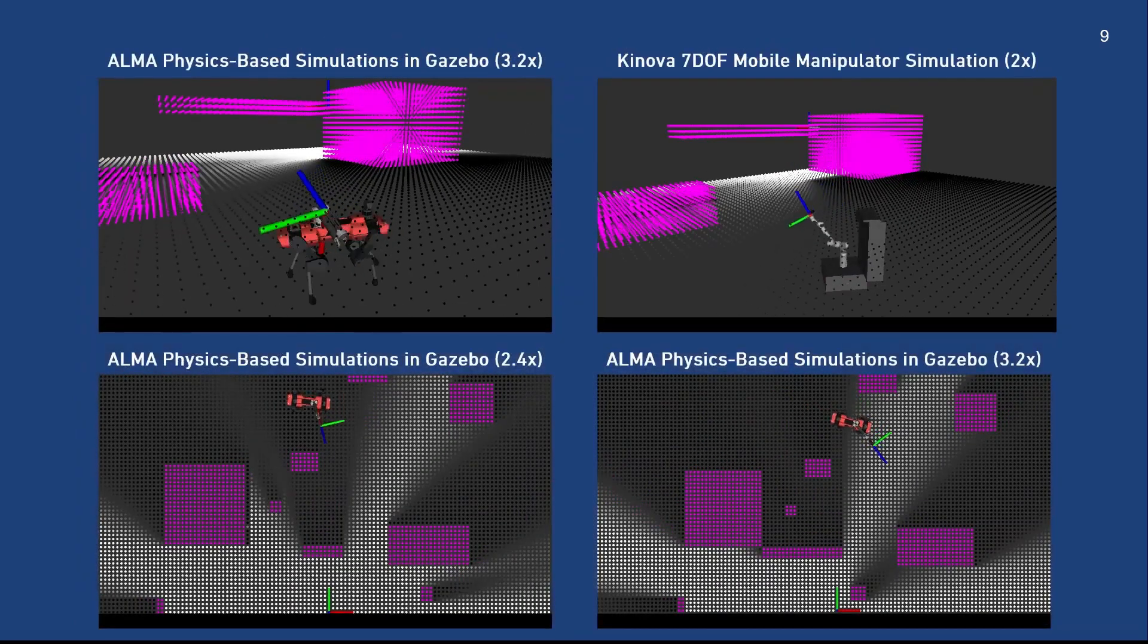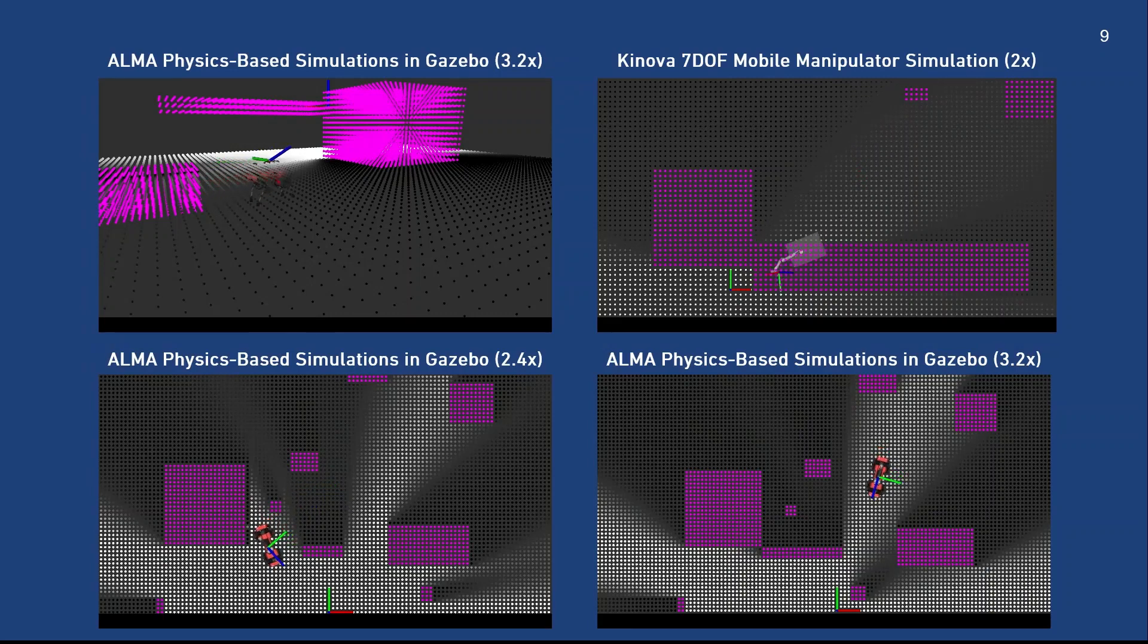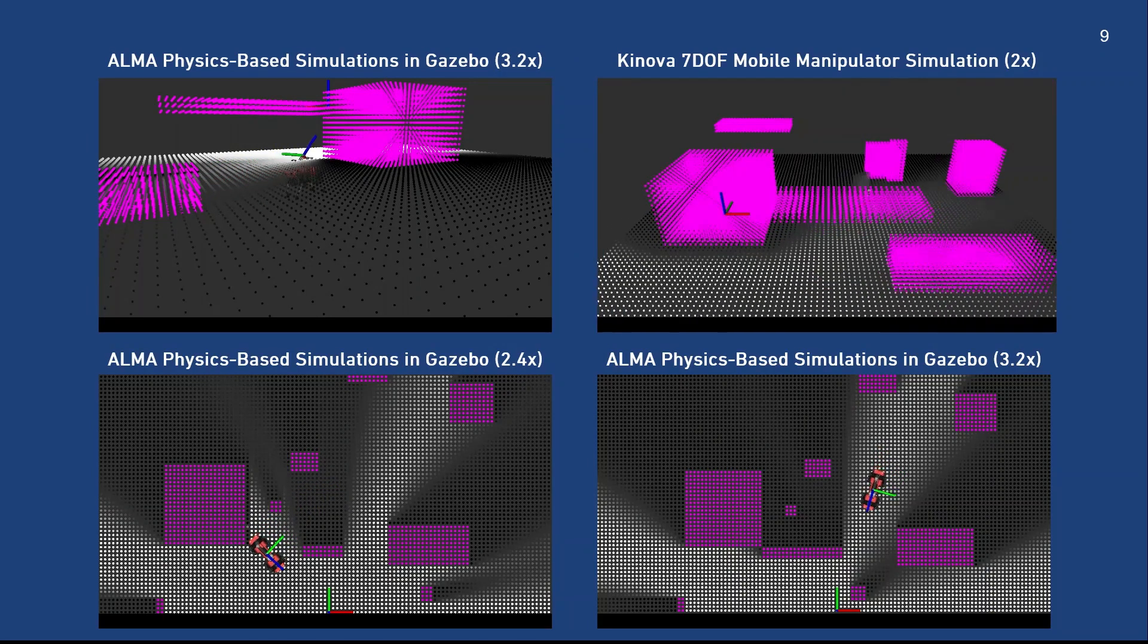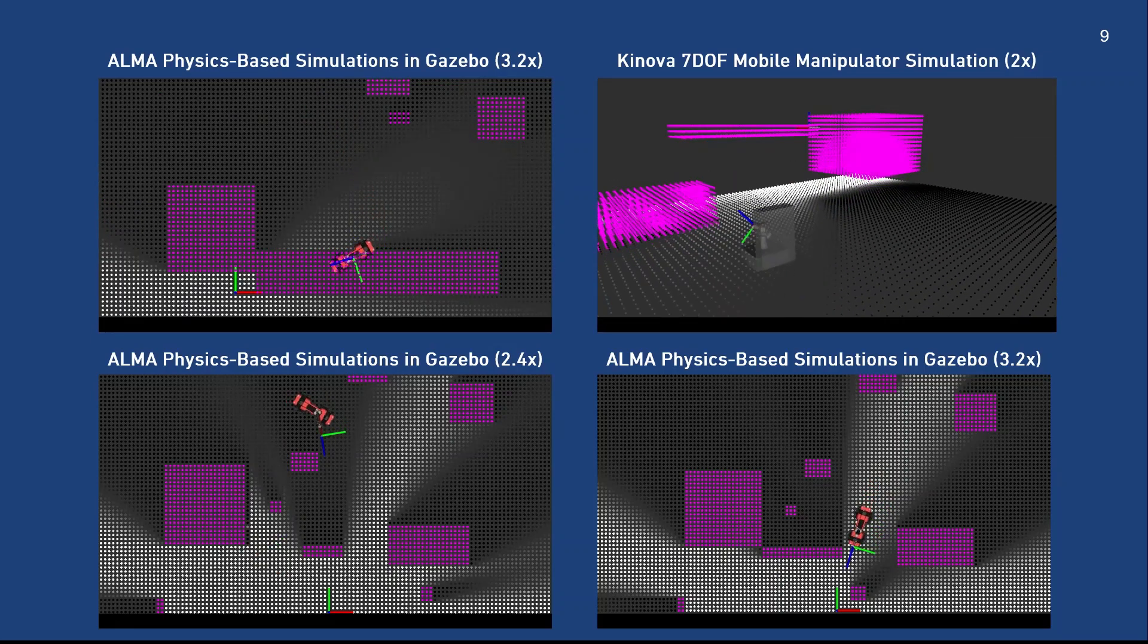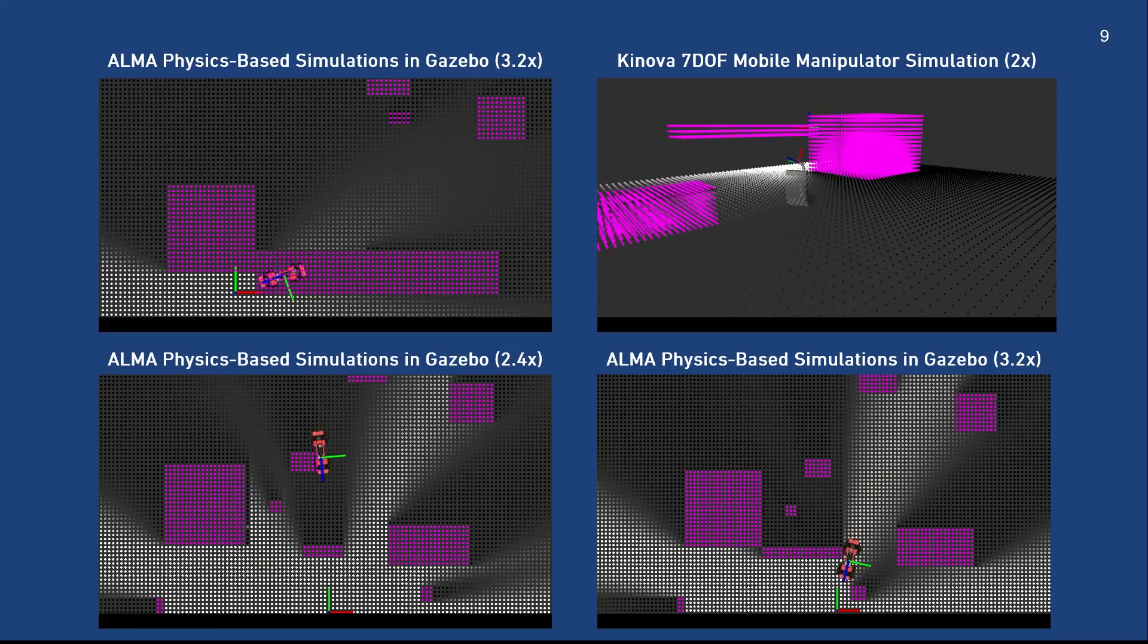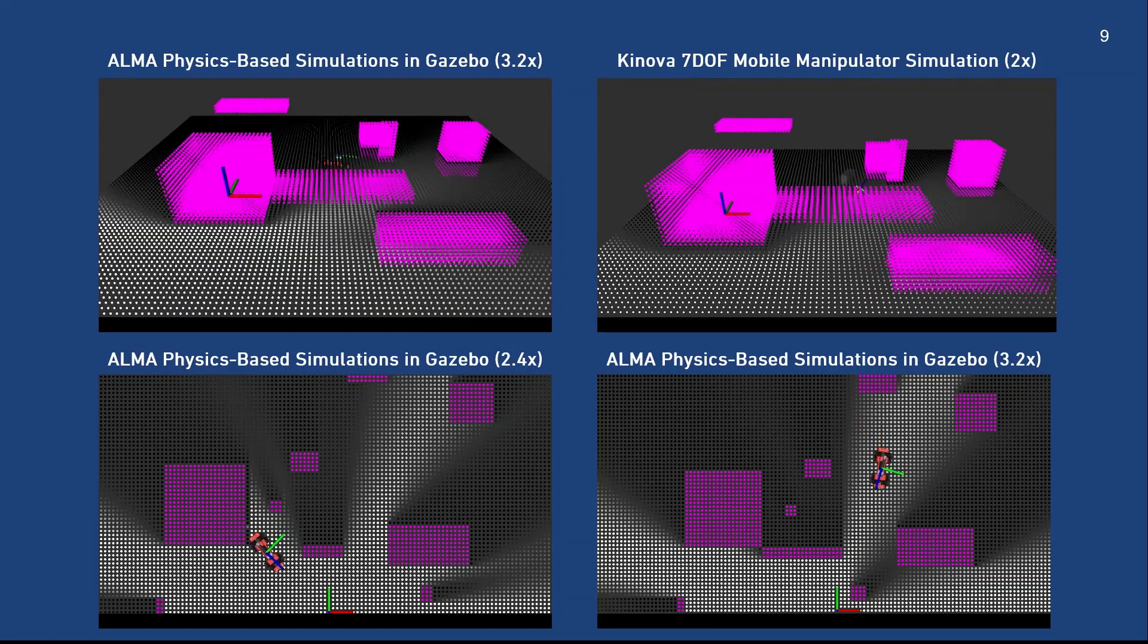Lastly, through physics-based simulations, we demonstrate the validity of our approach on both ALMA and a Kinova seven degrees of freedom mobile manipulator. We visualize the shadow field slice at the end effector level. In a game of hide and seek, our robots find the least shadowy path and establish a complete line of sight with the target, which is hidden in different scenarios behind simulated objects.